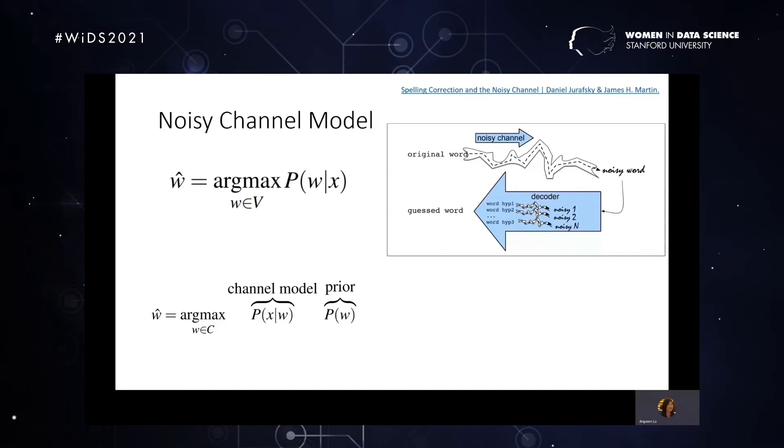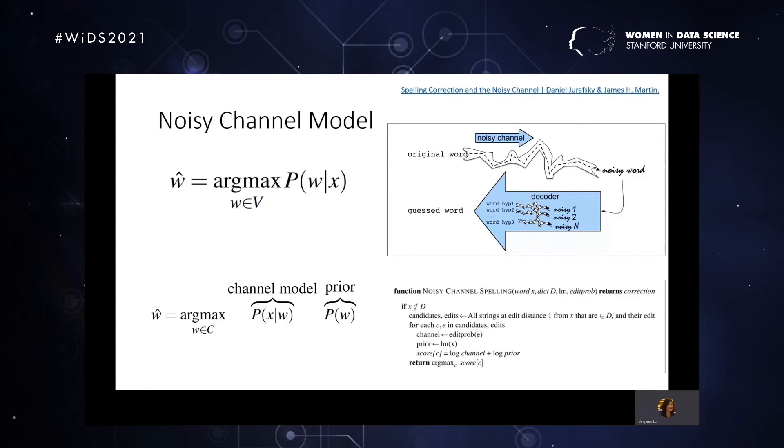So basically, we have two sub probabilities to estimate to come up with the probability of the correction given the spelling error. So the first part is the channel model. Let's try to model this part. So let's try to estimate the probability of the error given the word. And then there's also a prior, so try to predict the probability of the word. And this is more widely known as a language model for the prior and channel model. Sometimes you can see people talking about this as an error model.